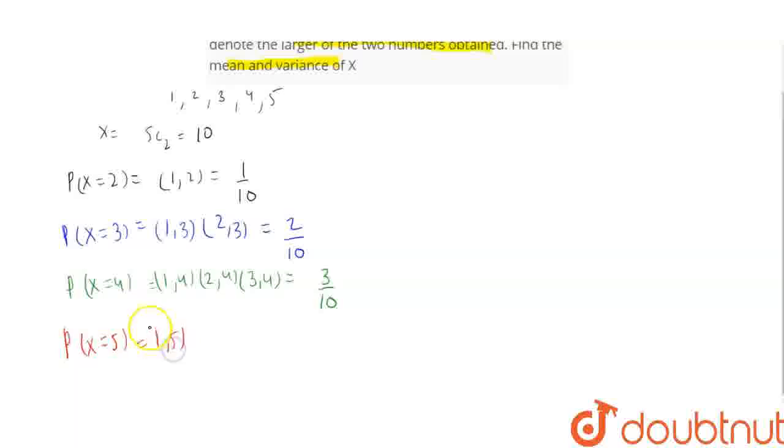Favourable outcomes are 2,5, 3,5, 4,5. That is 4 by 10.